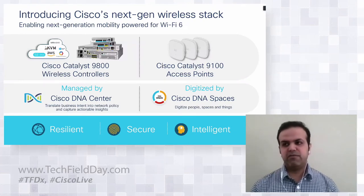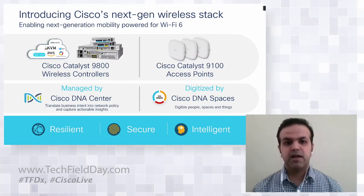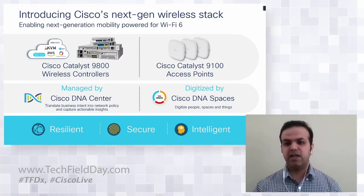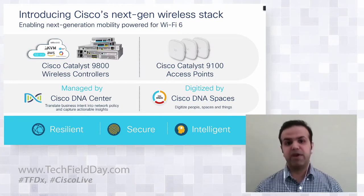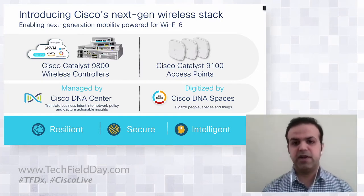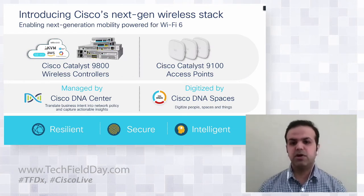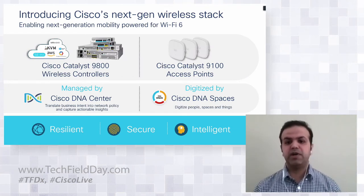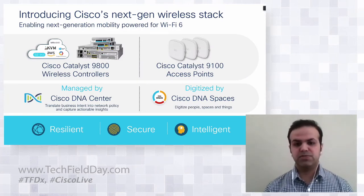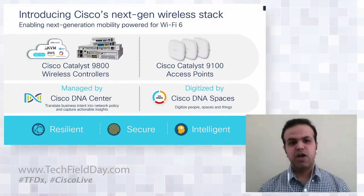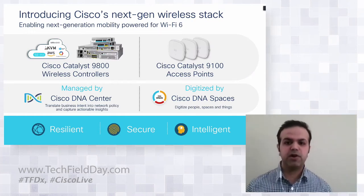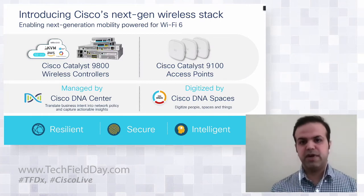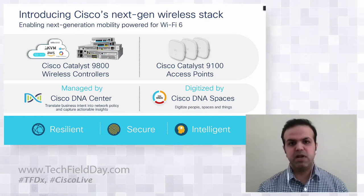Last time we did Tech Field Day from the wireless side, we talked about our entire stack. We have Catalyst 9100 access points and Catalyst 9800, which completes our wireless Catalyst portfolio now purpose-built for Wi-Fi 6. The entire stack is managed through Cisco DNA Center, which translates intent and turns it into policies. The stack is built on three key pillars: resiliency, security, and intelligence. Today I'll talk about the user-defined network solution, which is built on the security pillar.